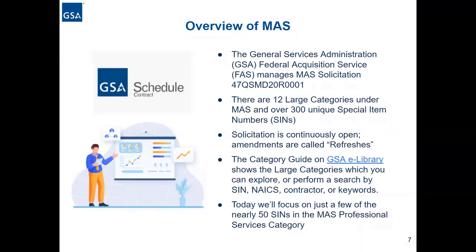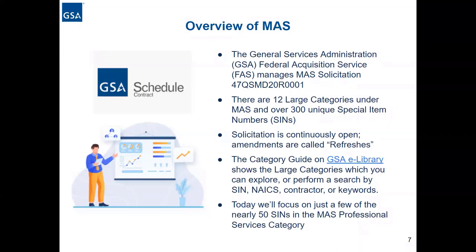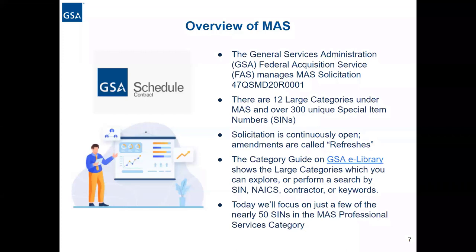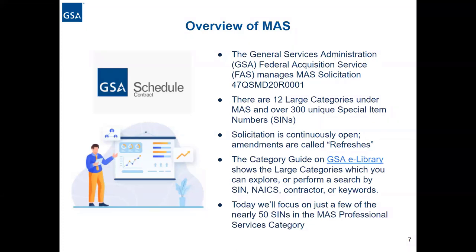Under the professional services category of MAS — one of the 12 categories — we have almost 50 SINs. Those SINs are owned and managed by the professional services and human capital category of GSA. MAS covers commercial products and services only; non-commercial products or services are not available under MAS. Today we're going to focus on a few professional services SINs that we recently added to the schedule or updated to expand the offering.